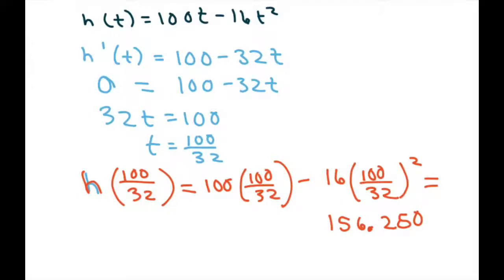We know that this is a maximum, not a minimum, because the second derivative is negative 32. So if I take the second derivative of this, h''(t), we get -32. So everywhere it's negative, that means it will give us a maximum, not a minimum.